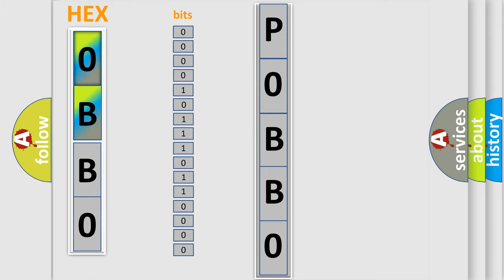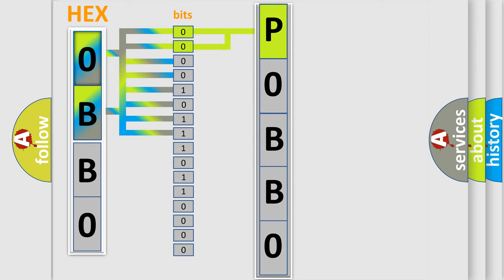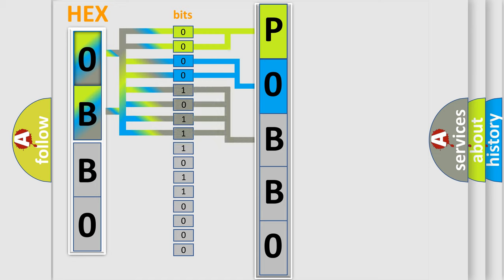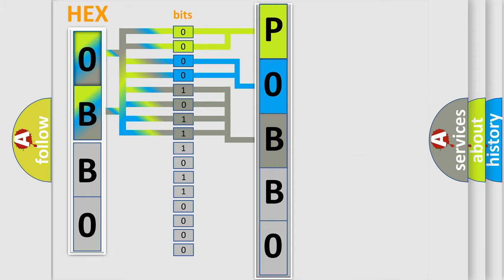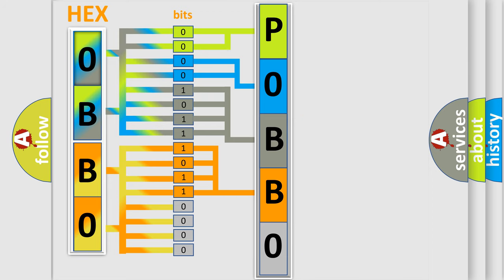One bit is the basic unit that each computer works with. The bit has two logical states: zero (low level) and one (high level). By combining the first two bits, the basic character of the error code is expressed. The next two bits determine the second character. The last four bits of the first byte define the third character of the code. The second byte is composed of a combination of eight bits. The first four bits determine the fourth character of the code.